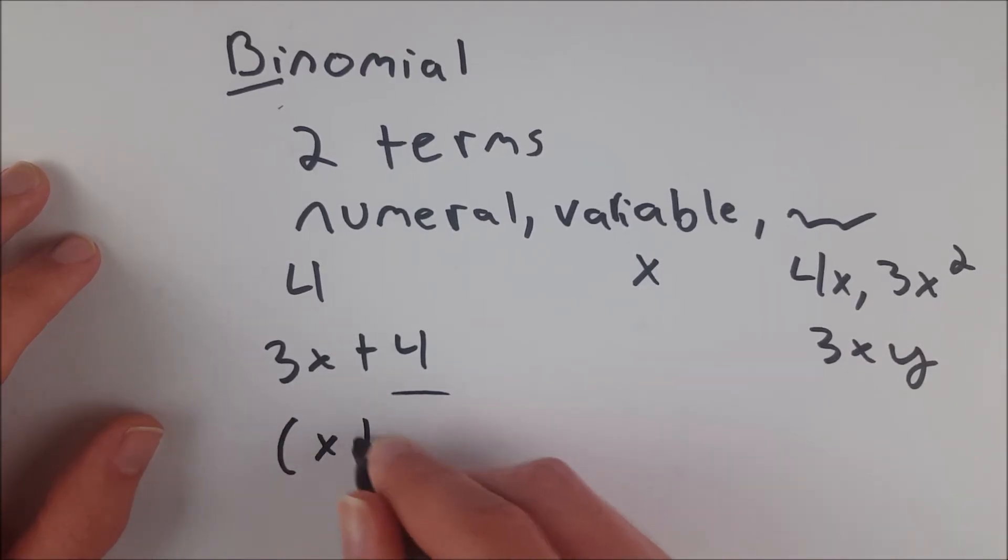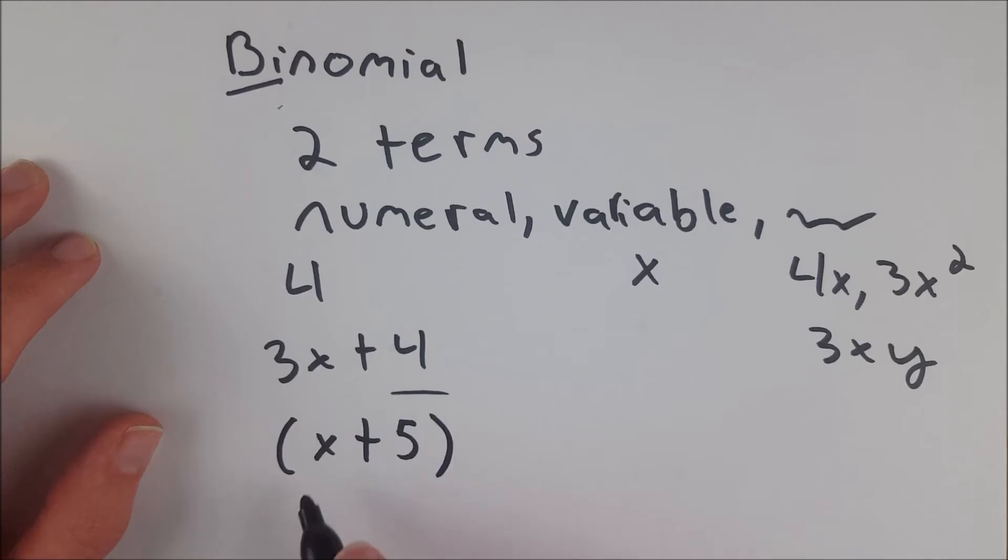Something like x plus 5 is a binomial, because we've got a variable and a constant, just two terms.